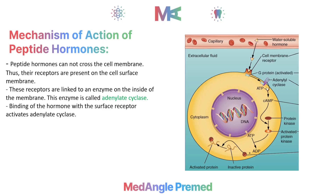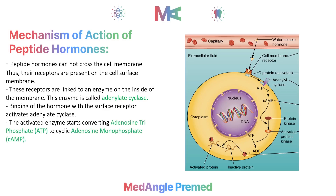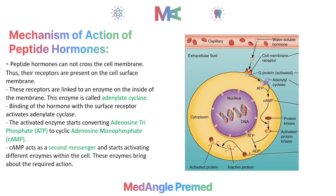When a peptide hormone binds to its receptor, the receptor activates adenylate cyclase, which converts ATP into cyclic AMP (cAMP). This cAMP acts as a second messenger and goes on to activate other enzymes, which then perform different functions within the cell. In summary: hormone binds receptor, receptor activates adenylate cyclase, adenylate cyclase converts ATP to cAMP, and cAMP activates enzymes for various cellular functions.